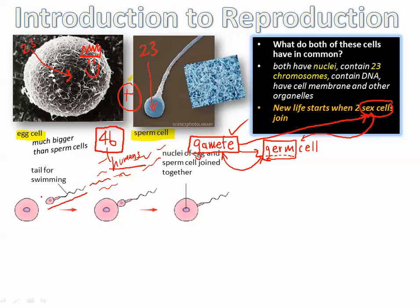Sperm cells swim to actually reach the egg — it's like a marathon. A bunch of them will not make it; they're going to die. Some of them are going to swim in the wrong direction.